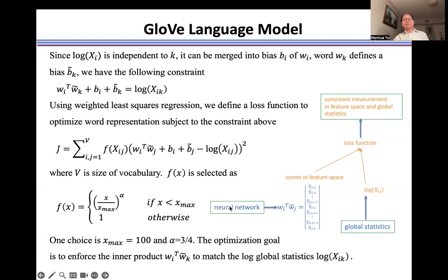One is from a neural network, the score distribution in the feature space. One is the co-occurrence probability from the global statistics. We combine these two terms as the loss function here to train the model. And the result is consistent in feature space and the global statistics.